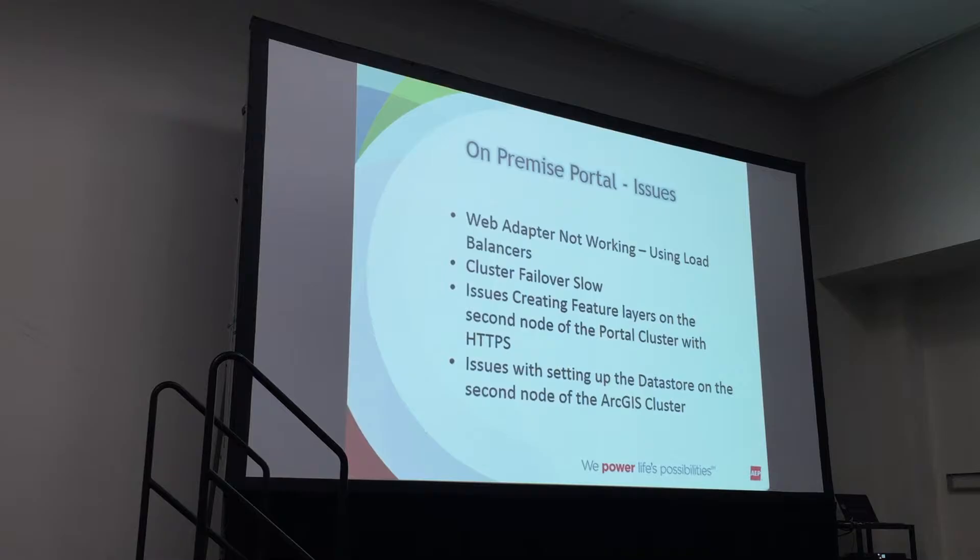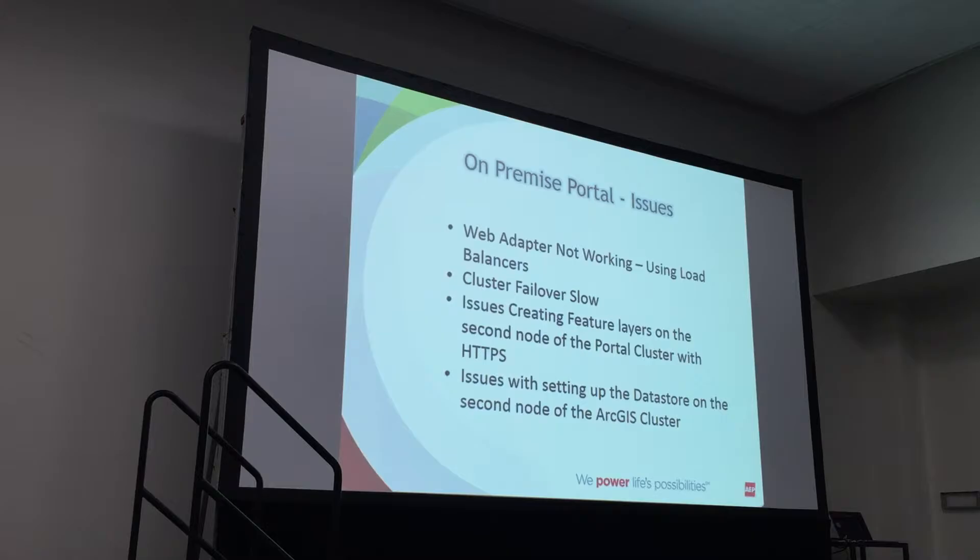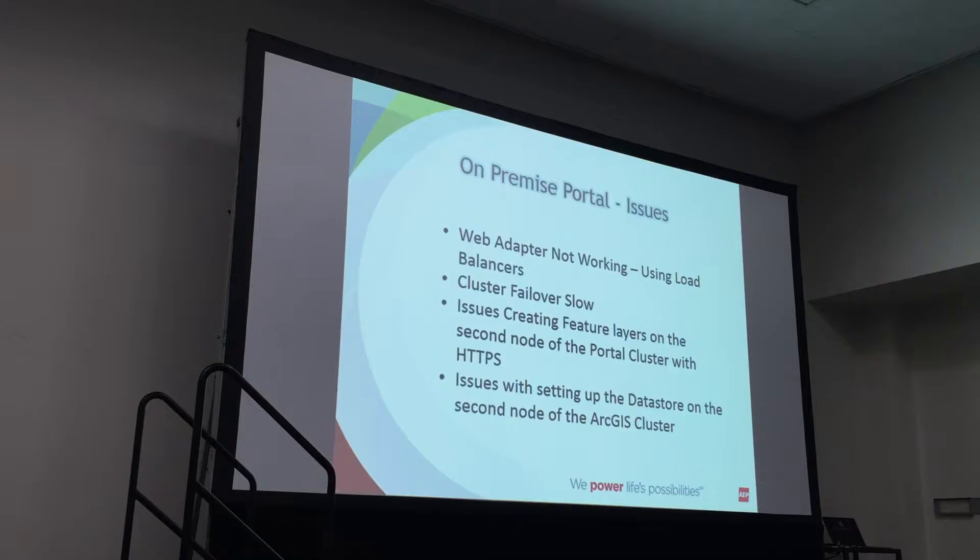Another issue is we can create feature layers on the first node in the portal, but we can't go to the second node and create feature layers with HTTPS turned on. We're trying to figure out what the issue is there. We've got tons of issues — I just selected a few.